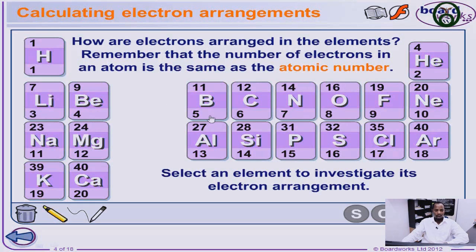Lithium is 3. Beryllium is 4. Boron is 5. Carbon is 6. Nitrogen is 7. Oxygen is 8. Fluorine is 9. Neon is 10. Sodium is 11. Magnesium is 12. Aluminium is 13. Silicon is 14. Phosphorus is 15. Sulfur is 16. Chlorine is 17. Argon is 18. Potassium is 19. And calcium is 20.